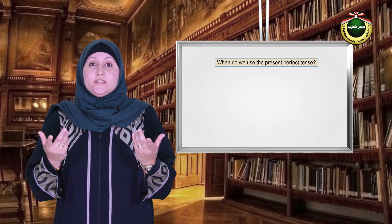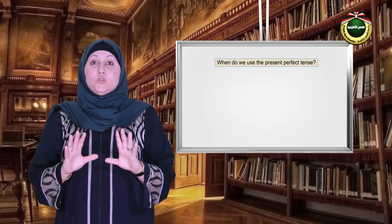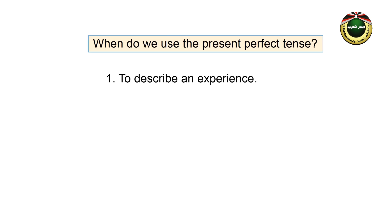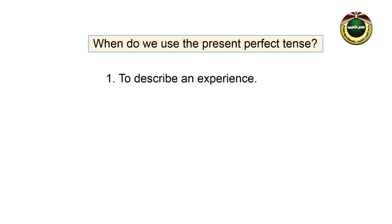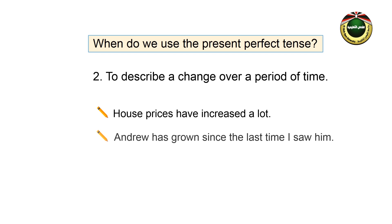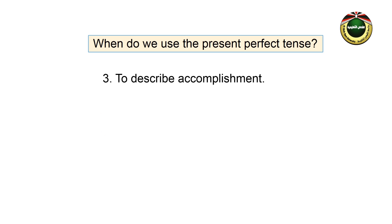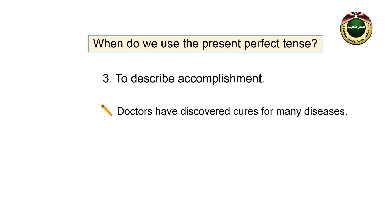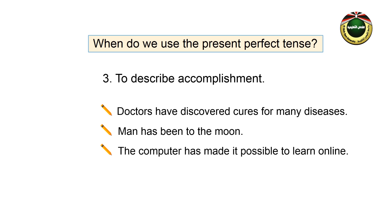Now, when do we use the present perfect tense? It's used in the following cases. One: to describe an experience. Examples: I have traveled the world. James has met the president. Two: to describe a change over a period of time. Examples: House prices have increased a lot. Andrew has grown since the last time I saw him. Three: to describe accomplishment. Doctors have discovered cures for many diseases. Man has been to the moon. The computer has made it possible to learn online.